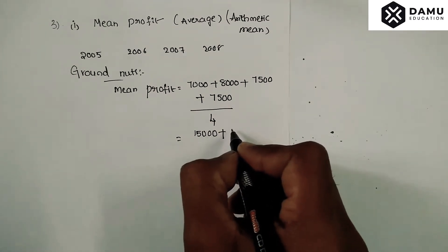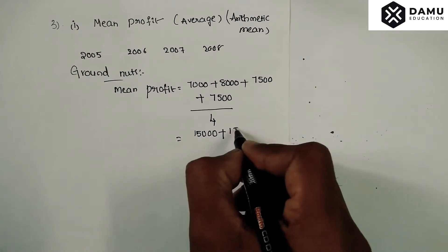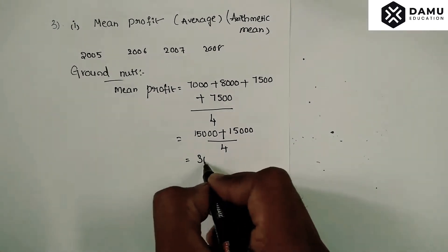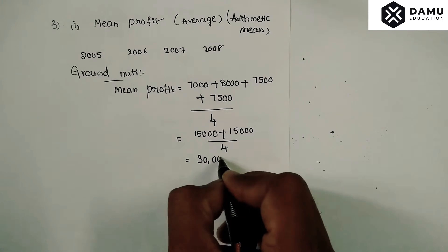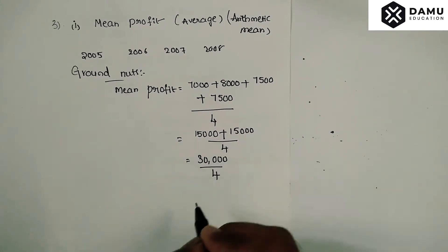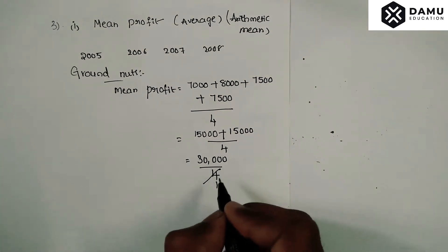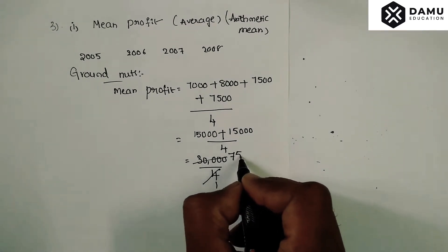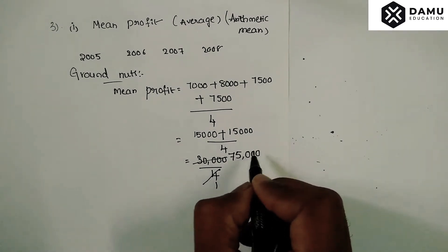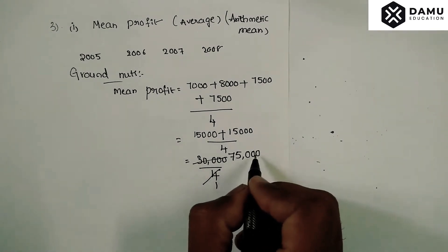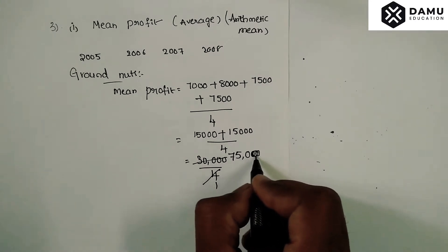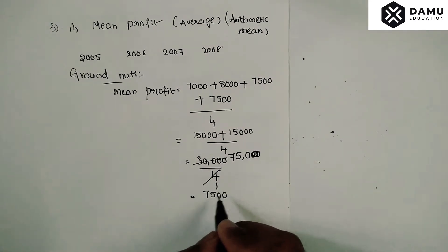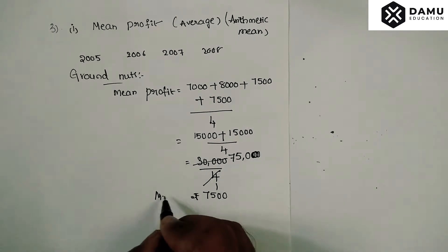Adding those values: seven thousand five hundred plus seven thousand five hundred is fifteen thousand, plus seven thousand plus eight thousand gives thirty thousand. Thirty thousand divided by four equals seven thousand five hundred rupees — that is the mean profit for groundnuts.